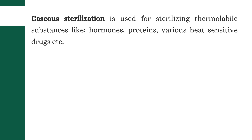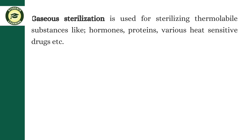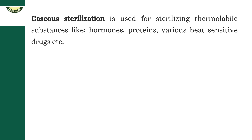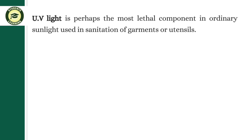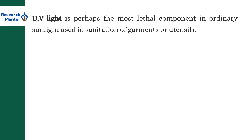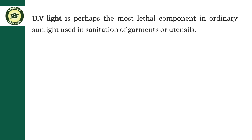Gaseous sterilization is used for sterilizing thermolabile substances like hormones, proteins, and various heat-sensitive drugs. The gases usually used in this technique are ethylene oxide, chlorine dioxide, ozone, and mixed oxides of nitrogen. UV light is perhaps the most lethal component in ordinary sunlight, used in sanitation of garments or utensils. It works on the principle of destroying the nucleic acids of microorganisms, which prevents the growth of microbial cells.